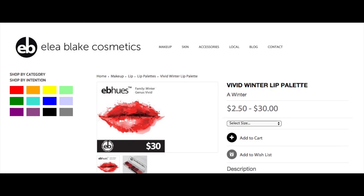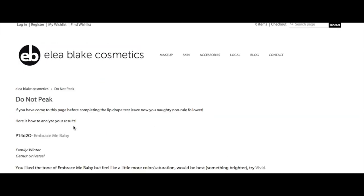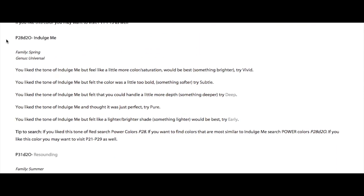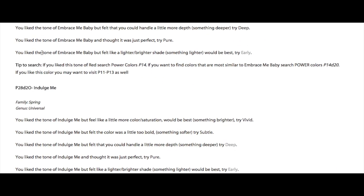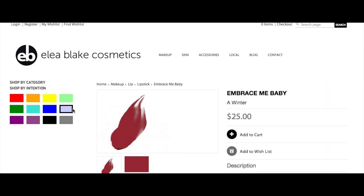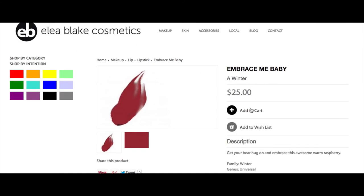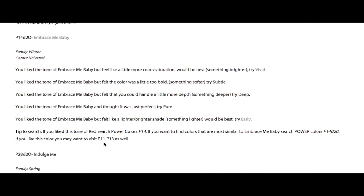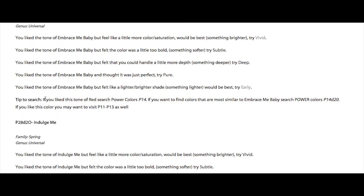So, the other thing that you can do is, as you can see, it has the family and the genus on each product. Well, you can, if you really like the product itself, you can just go immediately to the product and buy it and that's pretty simple and you'll know it looks good on you because you liked it if that was something that you enjoyed and you thought was perfect.